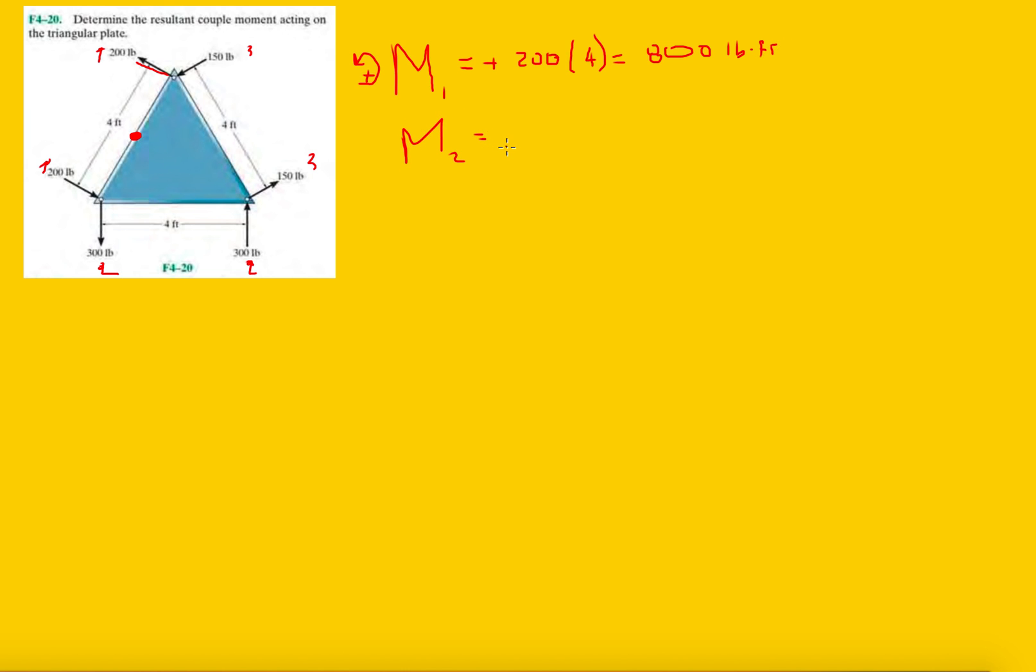M2: again, magnitude is 300, distance is 4. This rotates clockwise, so we got a 1200 pound-foot torque here.